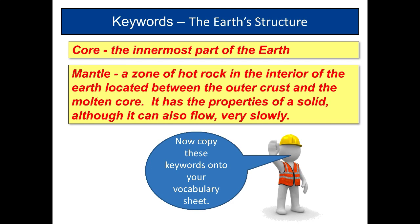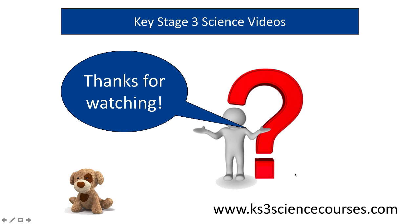That's enough to start with about the Earth. Let's get some keywords. The core is the innermost part of the Earth. The mantle is a zone of hot rock in the interior of the Earth located between the outer crust and the molten core. It has the properties of a solid, although it can flow very slowly. As it does, it causes the movement of tectonic plates. So copy these keywords onto your vocab sheet and make sure that you understand what they mean.